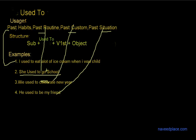So, why do we use 'used to'? To show past habits, past routine, past custom, and past situation. Past habit: 'I used to eat a lot of ice cream when I was a child.' Past routine: 'I used to go to school' or 'I used to go to the institute.' Past custom: 'We used to celebrate New Year.' Past situation: 'He used to be my friend.'